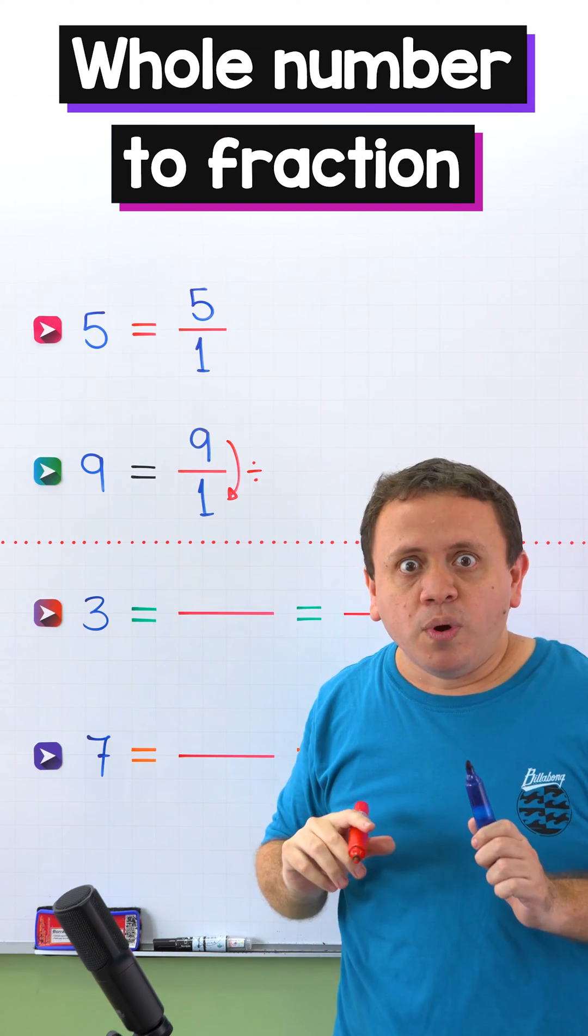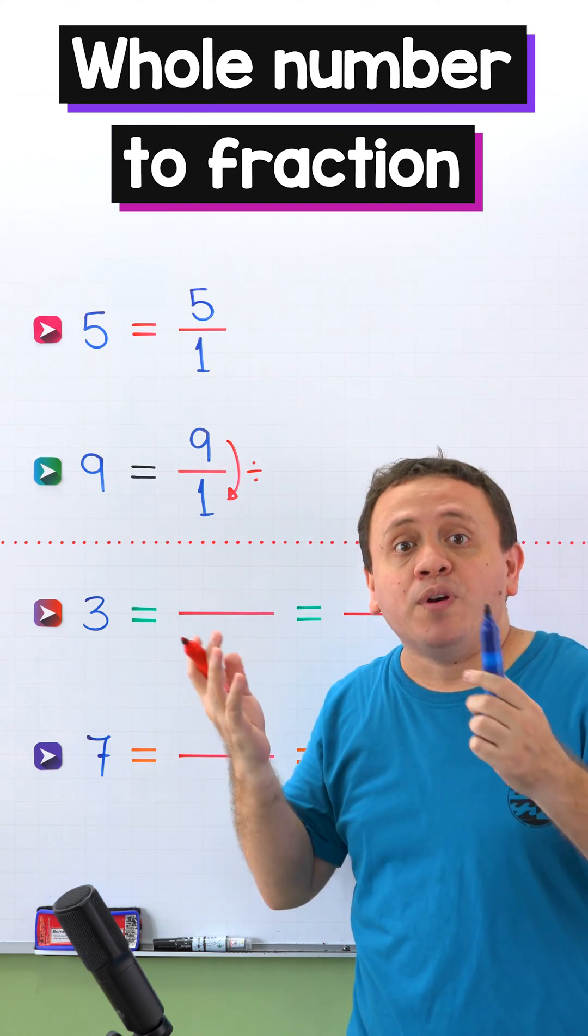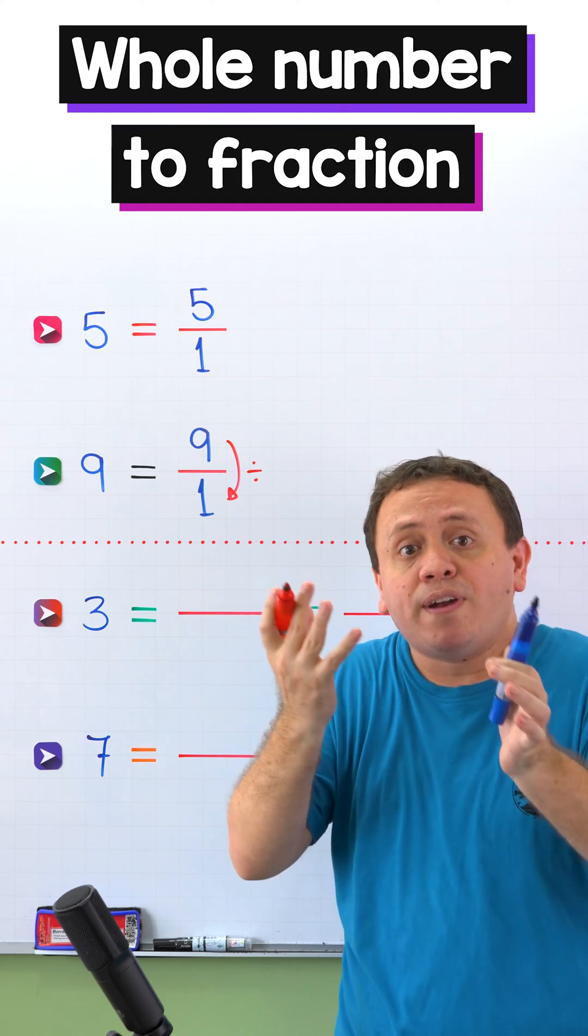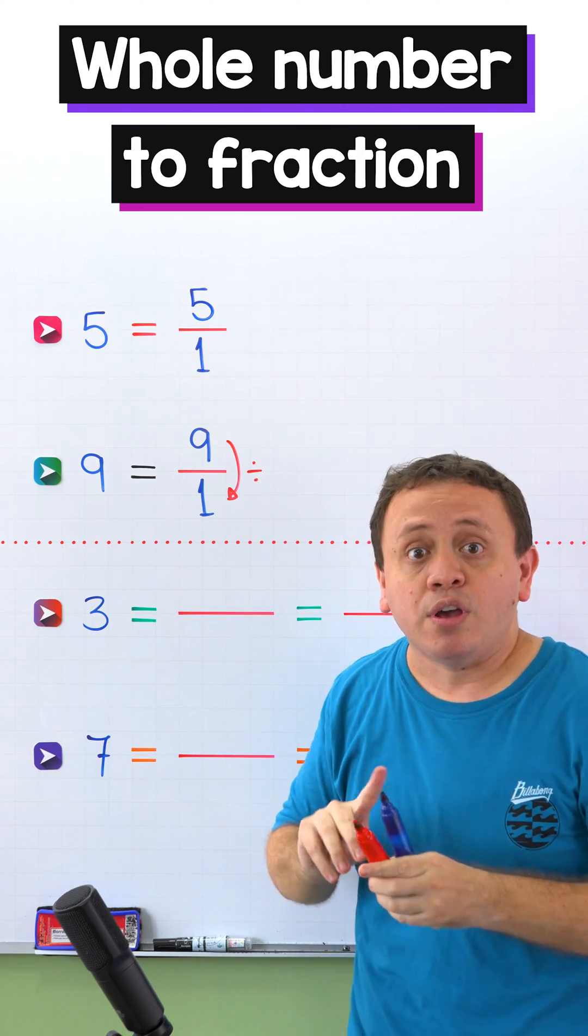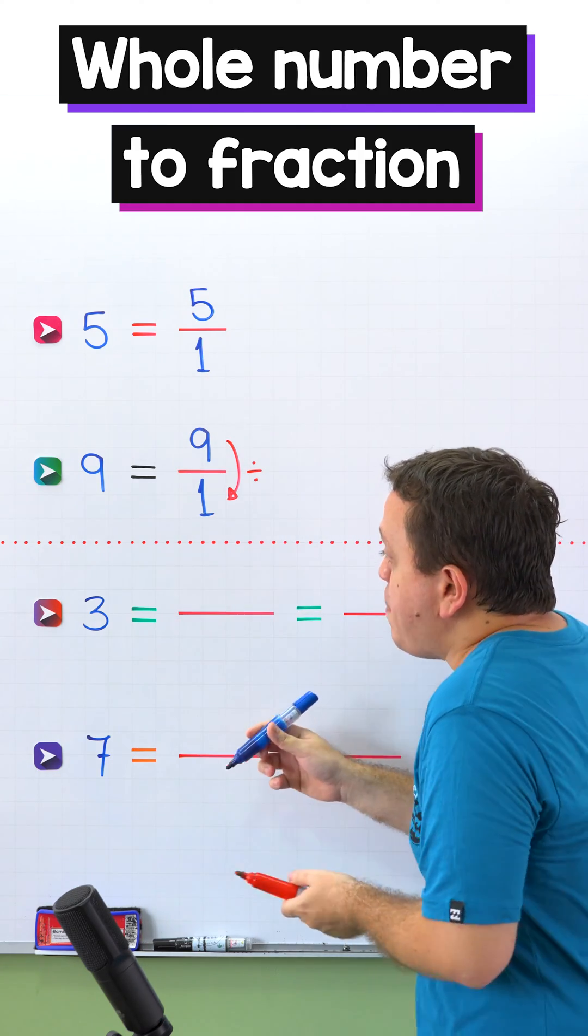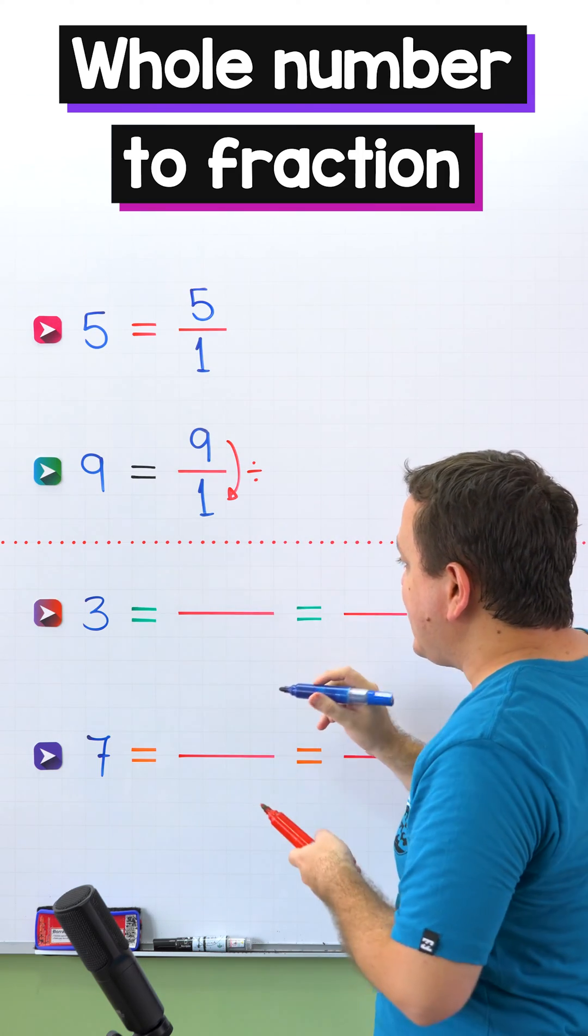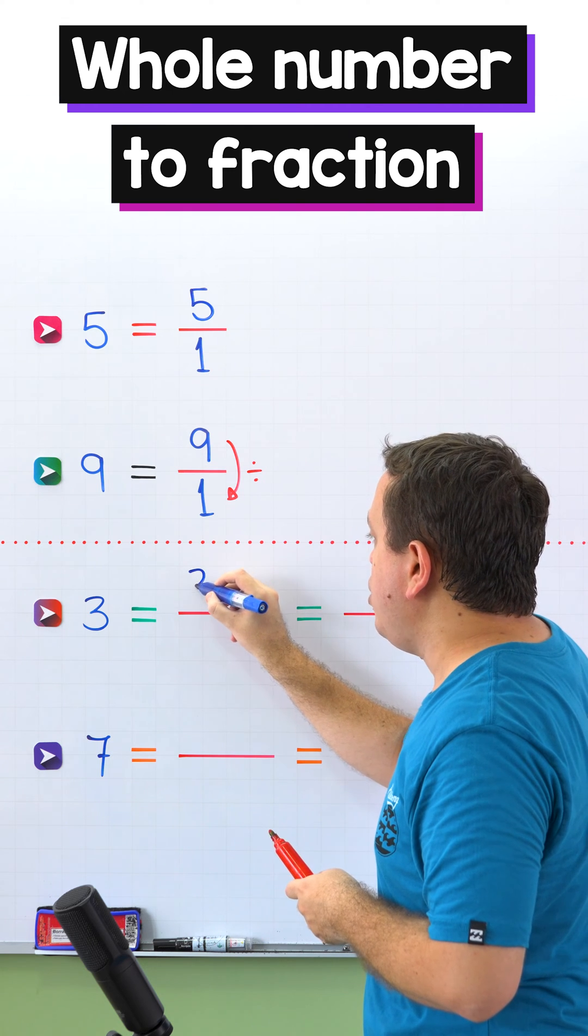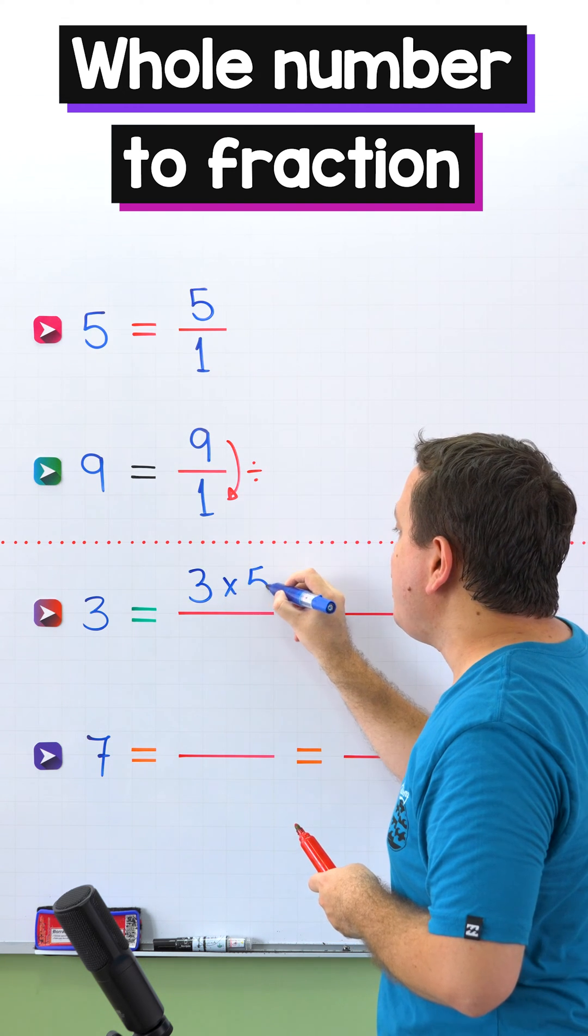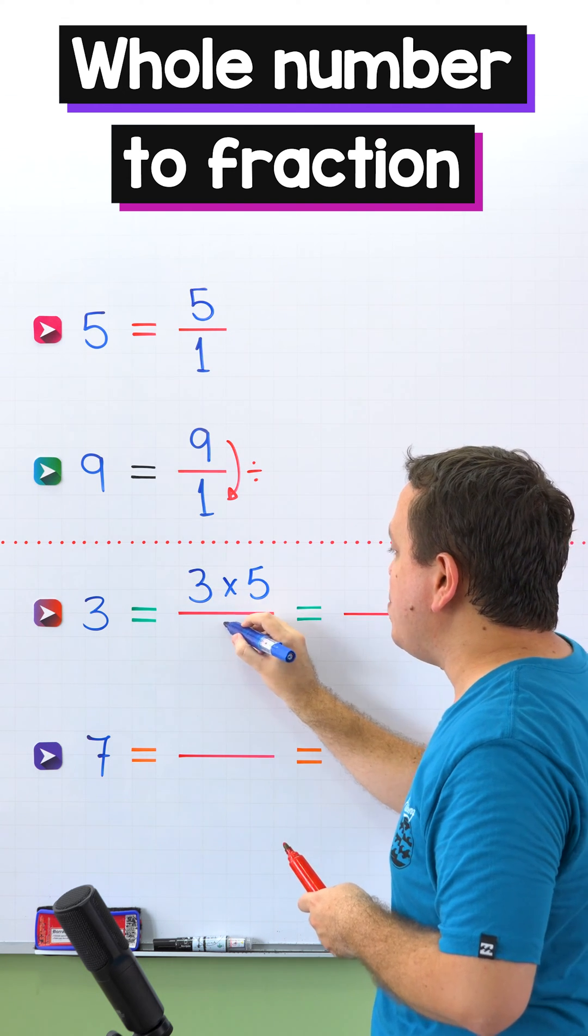Now pay attention to the following question. What would happen if we need to convert a whole number to a fraction with a specific denominator? For example, what would happen if we need to convert 3 to a fraction with denominator 5? Well, in that case, first we multiply 3 by 5, and then we divide this product by 5.